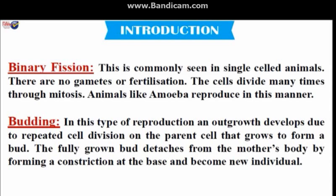Budding. In this type of reproduction, an outgrowth develops due to repeated cell division on the parent cell that grows to form a bud. The fully grown bud detaches from the mother's body by forming a constriction at the base and becomes a new individual.